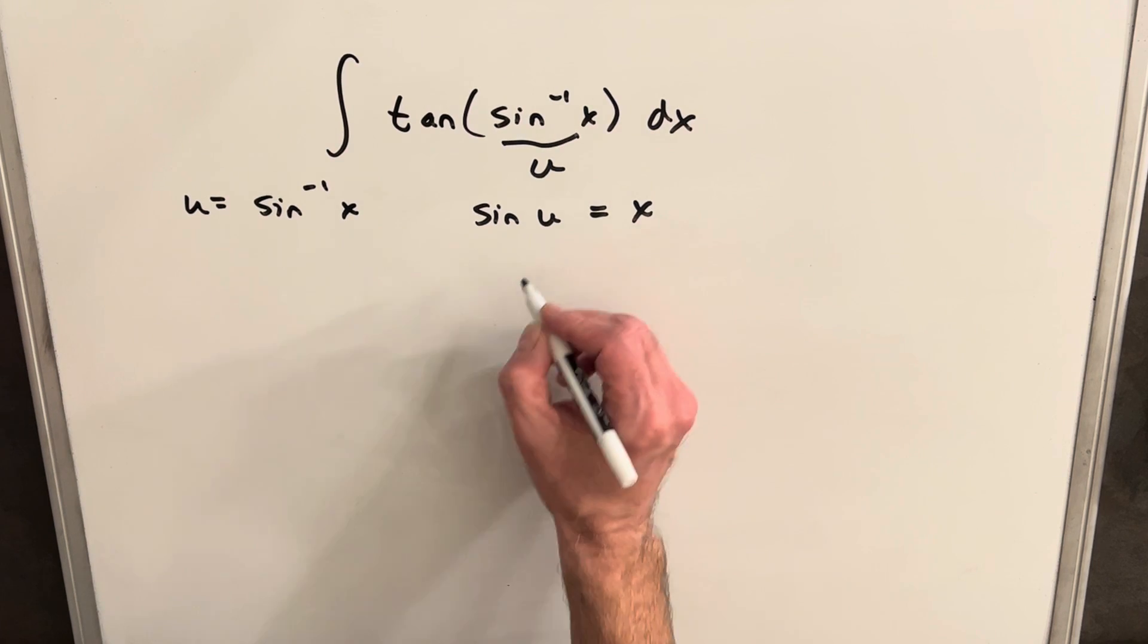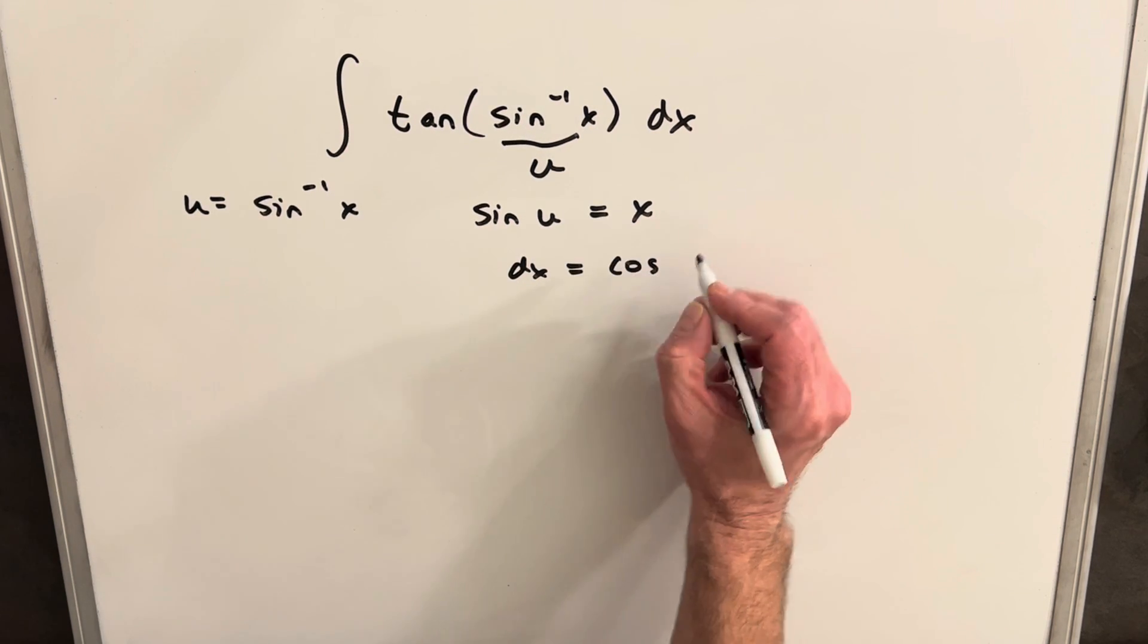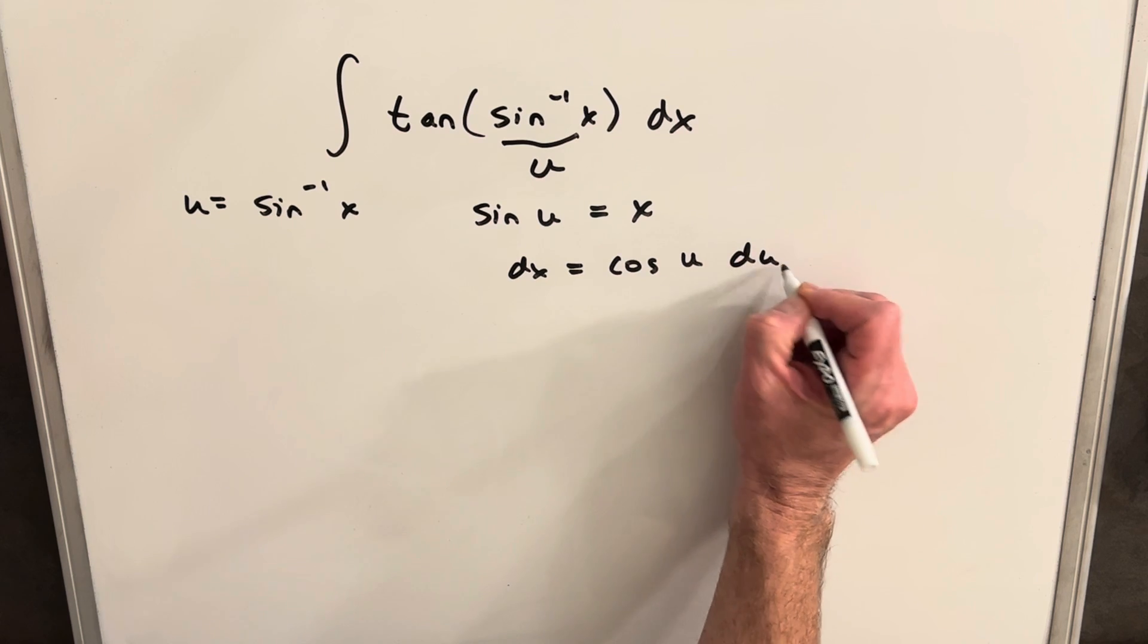And then from here, we can take the derivative and find that dx is going to be equal to cos(u) du.